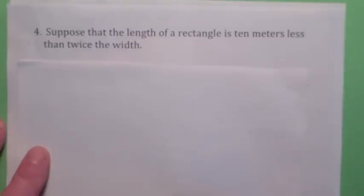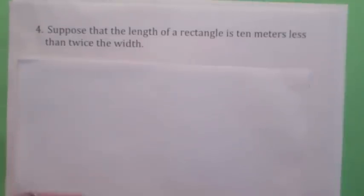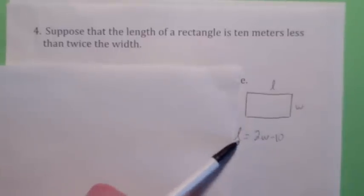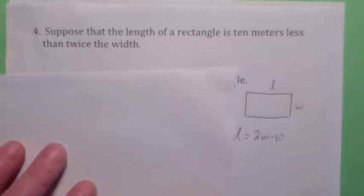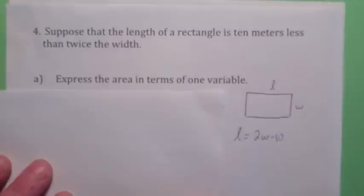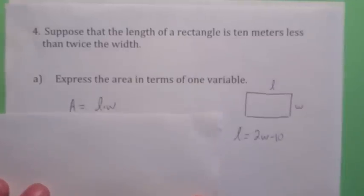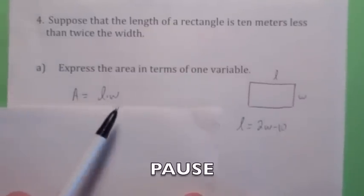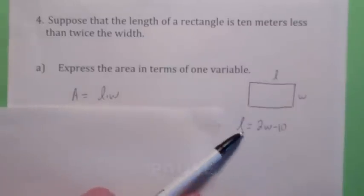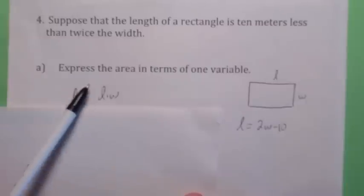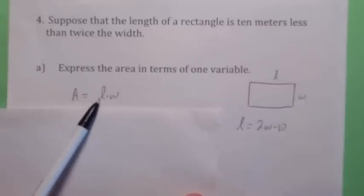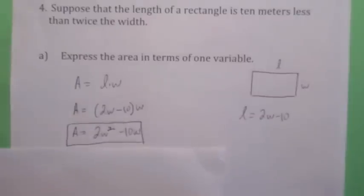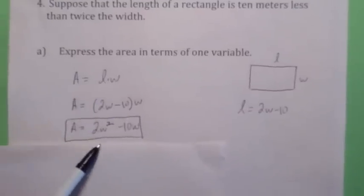Suppose the length of a rectangle is 10 meters less than twice the width, so L equals 2w minus 10. Express the area in terms of one variable. Since the length is 2w minus 10, it's easier to express the area in terms of w — just replace L with 2w minus 10 in the area formula, and you have the area in terms of w only.